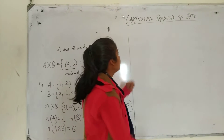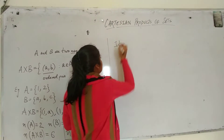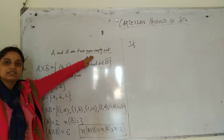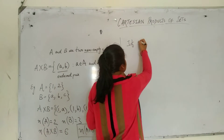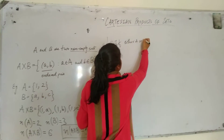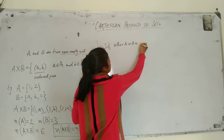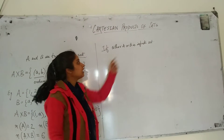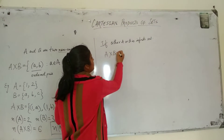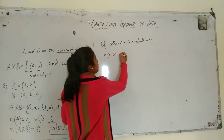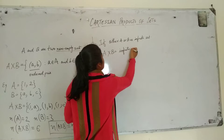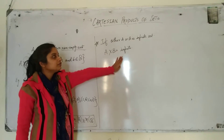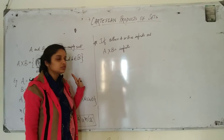Next, note that we have taken A and B as non-empty sets. If either A or B is an infinite set, then A cross B — the Cartesian product — will also be infinite. This is one property: if one of the sets is infinite, then the Cartesian product is also infinite.